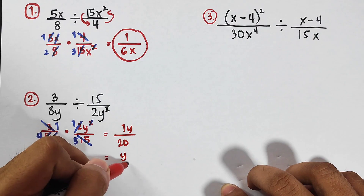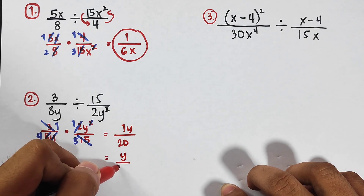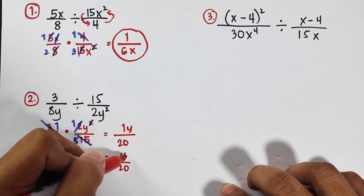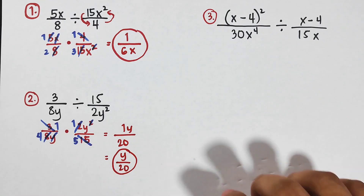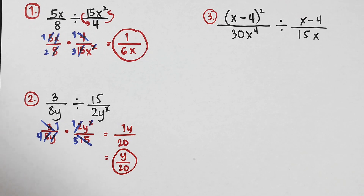Multiply what remains: 1 times 1 is 1 over 4 times 5 which is 20, and we still have y. So the answer for item number 2 is y over 20.